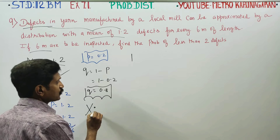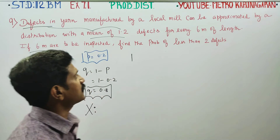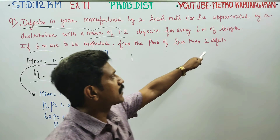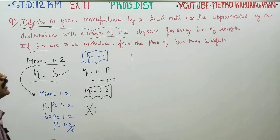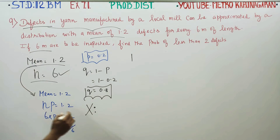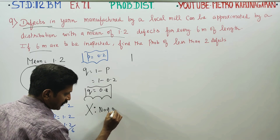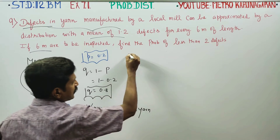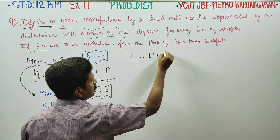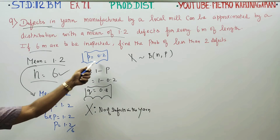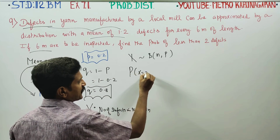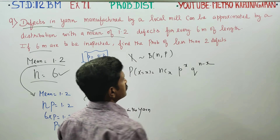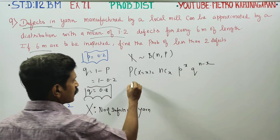If you look at X — less than two defects in the next 6 meters length yarn. The number of defects in the yarn, X, follows binomial distribution with parameters n and p, where n equals 6 and p equals 0.2. The binomial distribution formula is: P(X = x) = nCx × p^x × q^(n−x).